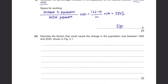Describe the factors that could cause the change in population size between 1940 and 2020. The population increased because of an increase in birth rate and decrease in death rate, thanks to a developed healthcare system. There was also increased food supply, leading to reduced poverty and starvation. Since there is AVP in the mark scheme, you can write anything sensible — for example, better housing, development of vaccination, and improved sanitation.